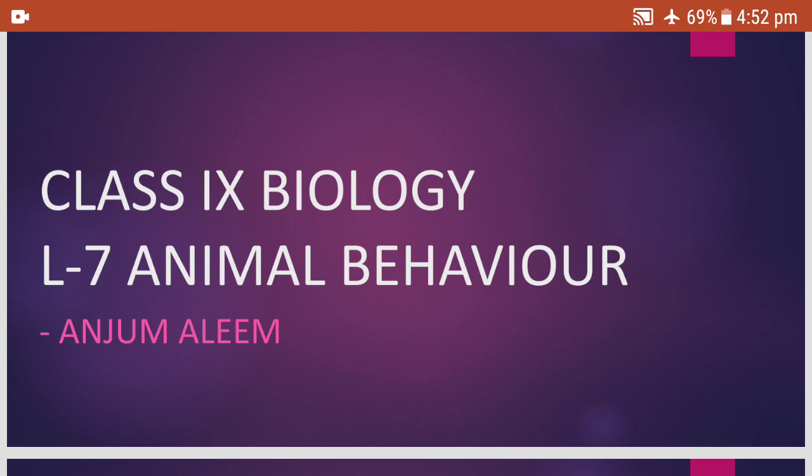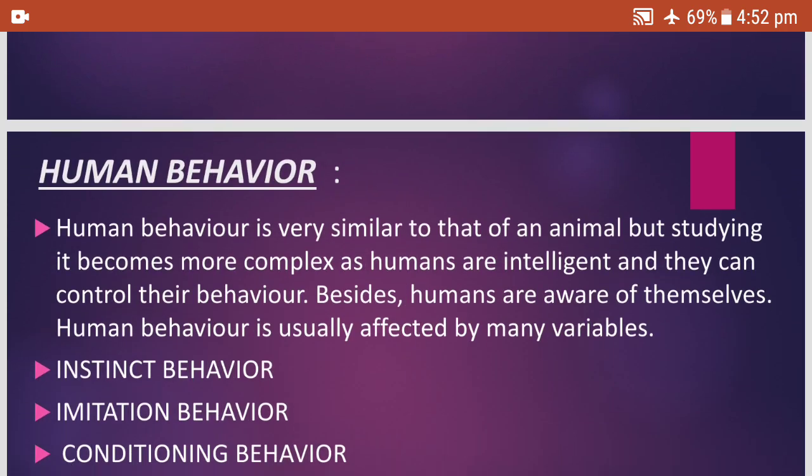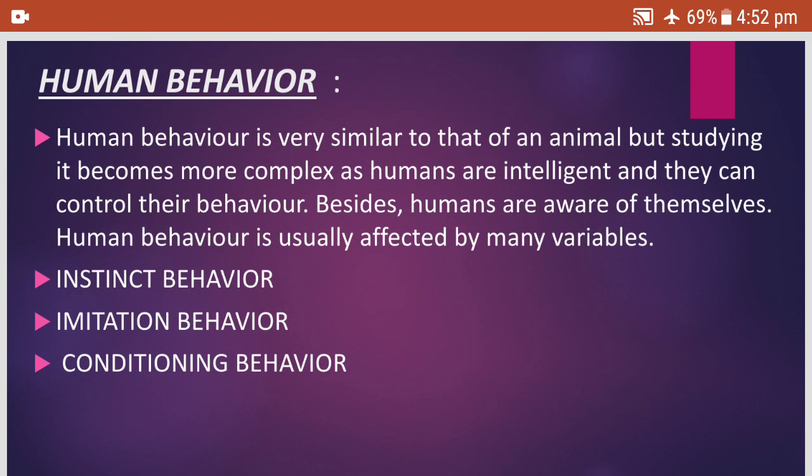In my last video, we started with lesson number 7, Animal Behavior, in which we saw the four different types of animal behavior. Today, I am going to talk to you about human behavior — how do we human beings behave, and in what different ways do we behave?